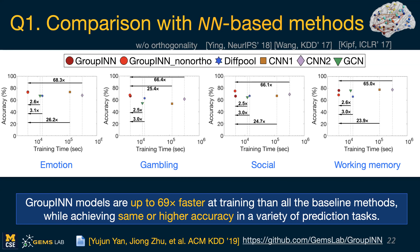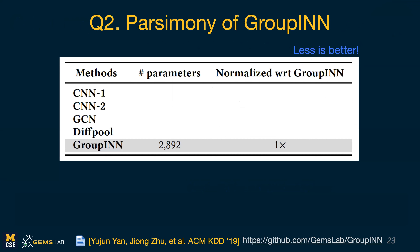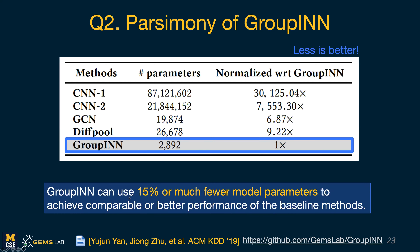The exact accuracy depends on the task — not all tasks are equally meaningful or equally predictive of cognitive or intellectual ability. But the point is that we can train faster because of this summarization layer. Grouping needs only 15% or fewer model parameters and still achieves similar or better performance. This is again thanks to this summarization layer.